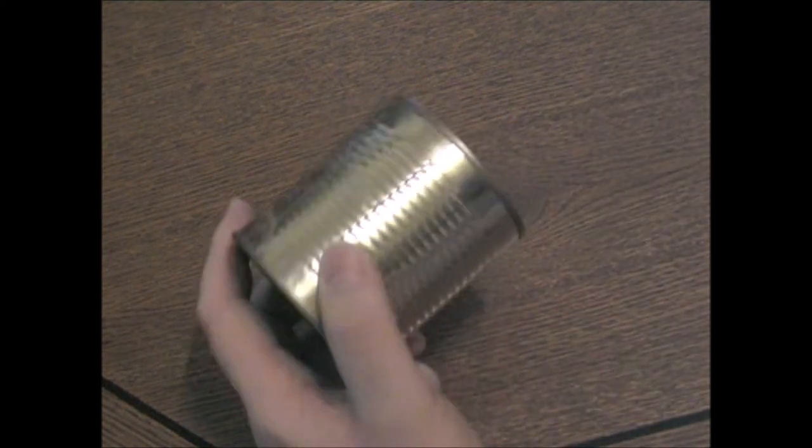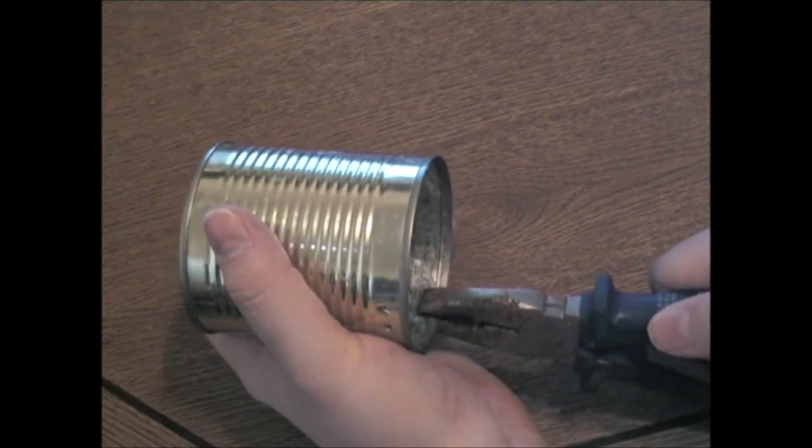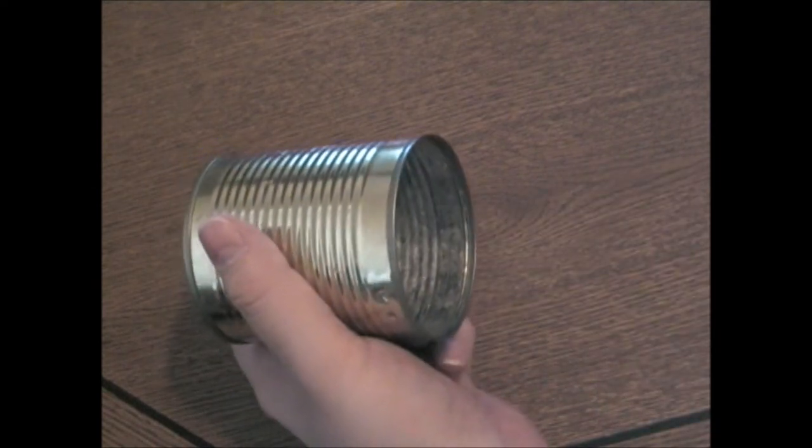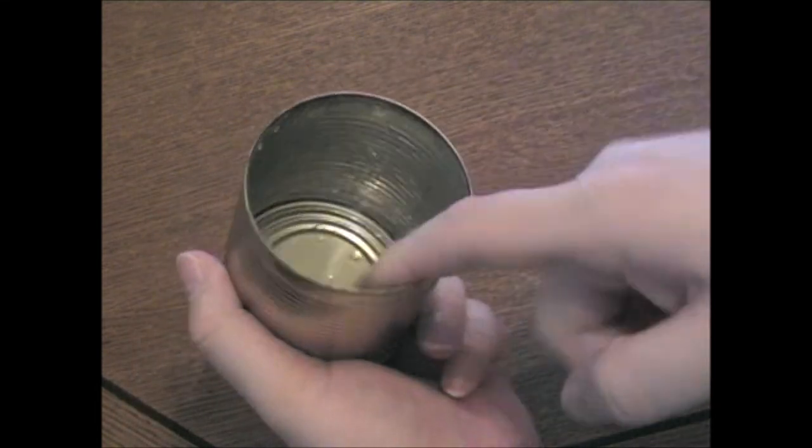The first step is to go to your local dumpster and find your nice tin can, just like this one here. Then you crimp down the brim so you don't cut your lips open when you drink. And make sure there are no sharp edges left. So test it with your finger and don't cut yourself.